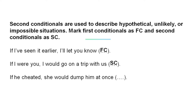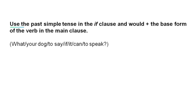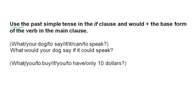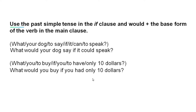'If he cheated, she would dump him at once.' — Second conditional. Also, remember to use the past simple tense in the if clause and 'would' plus the base form of the verb in the main clause. Now, create a sentence using the words in the following bracket: 'What your dog to say if it can't to speak?' Answer: 'What would your dog say if it could speak?' 'What you to buy if you to have only $10?' Answer: 'What would you buy if you had only $10?'